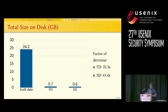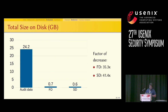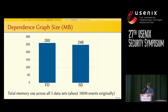Using our compact data representation techniques, we can store data for offline investigations at 35 times smaller than the original audit log, which is 24 gigabytes. Using source dependence, we can reduce it further to 41 times smaller. For all five datasets totaling 100 million events, the graph can be stored in memory in only 26 megabytes using full dependence, and 248 megabytes using source dependence.